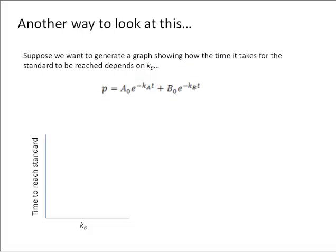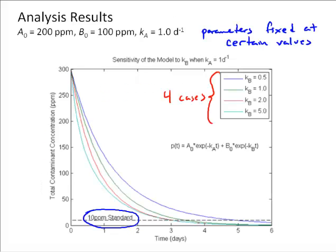Let's say we've looked at this graph, and we say, well what I really want to know, I'm really interested in this. I'm interested in how the time it takes to reach that standard—I can see that it's about three seconds or three days for kᵦ equals two and kᵦ equals five. Then all of a sudden it increases as kᵦ gets beyond, gets smaller than two. I really want to look at that situation.